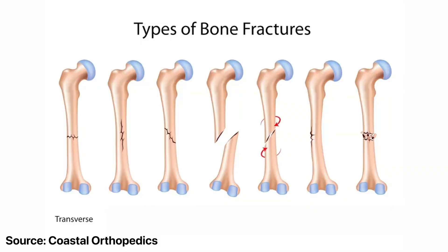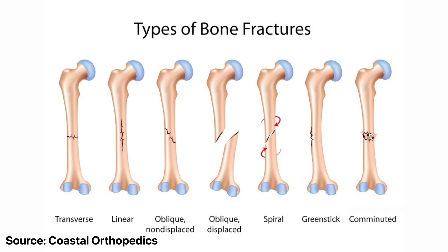The different types of long bone fractures are as follows: we have the transverse, linear, oblique, spiral, greenstick, and comminuted fractures. These are quite good because for the most part the name already describes the fracture type.